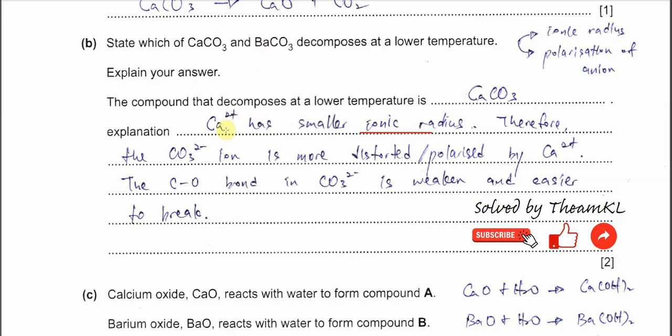This means the calcium ion has a greater charge density, and it can polarize or distort the electron cloud in the carbonate more. When the carbonate is distorted or polarized, the C–O bond inside the carbonate will be easier to break or is weakened. When it's easy to break, it needs a lower temperature.